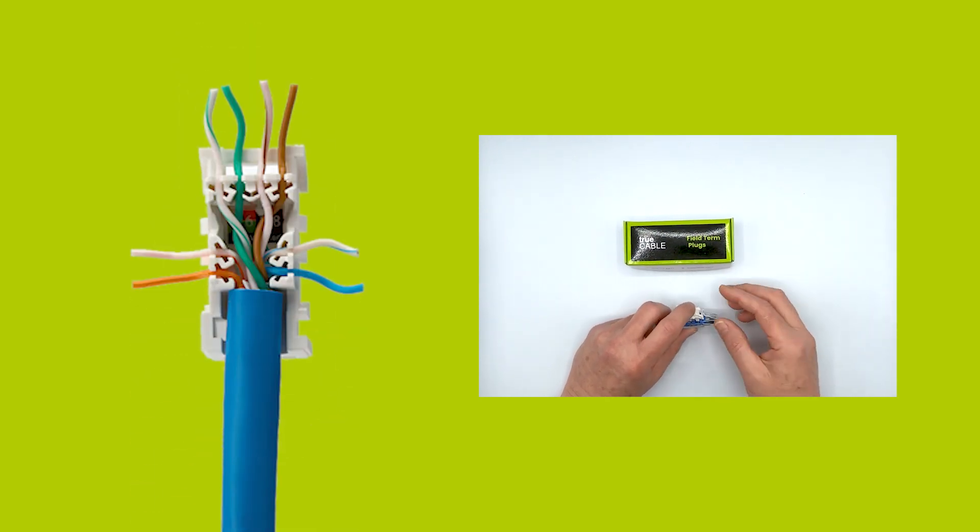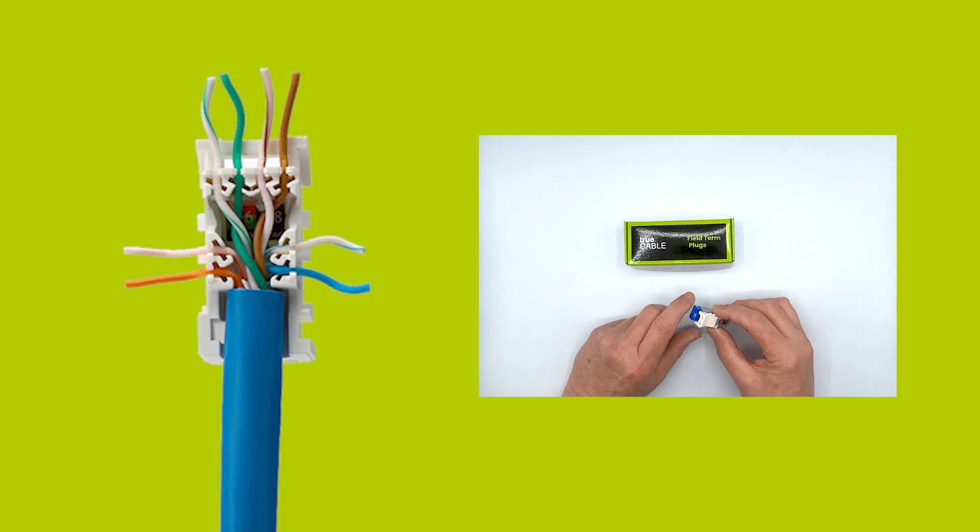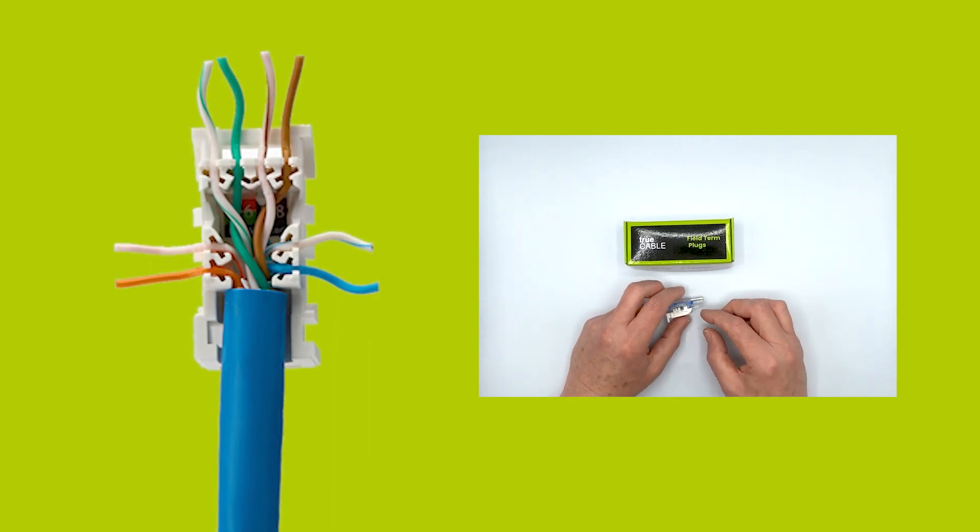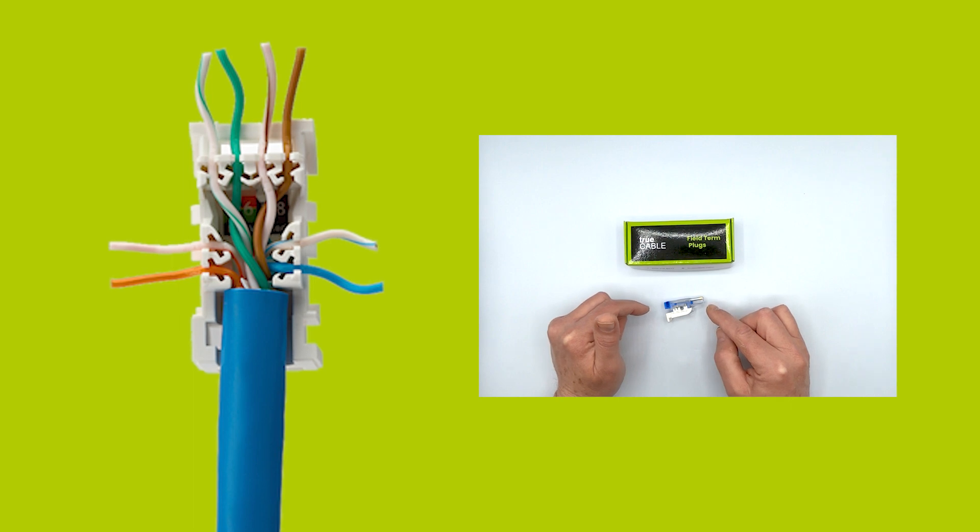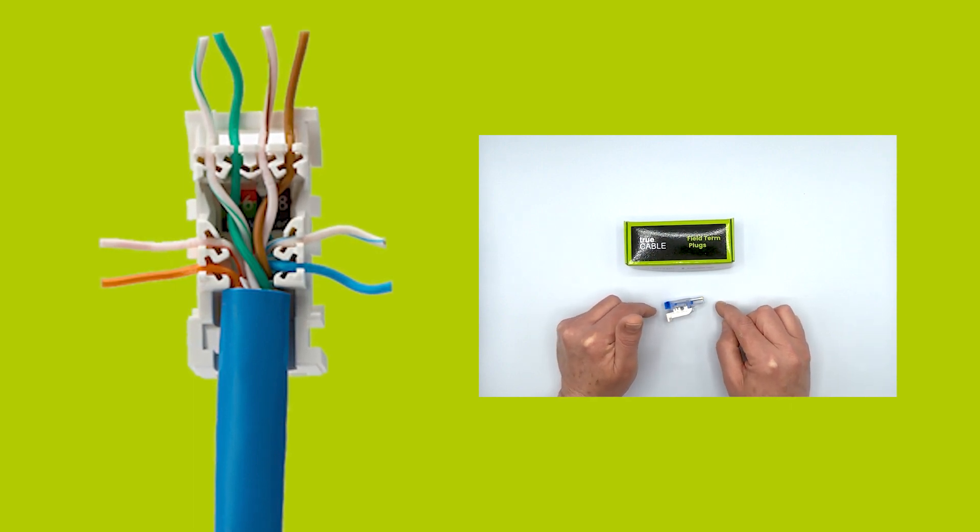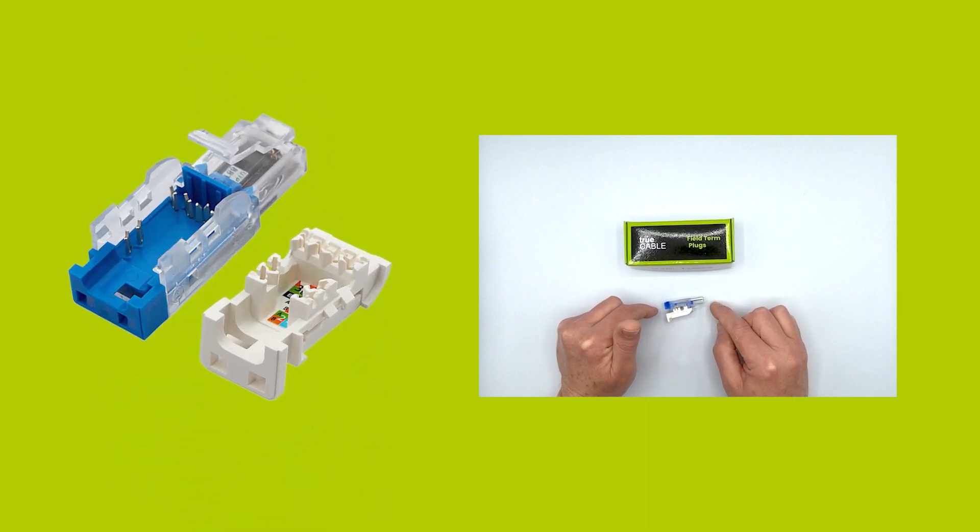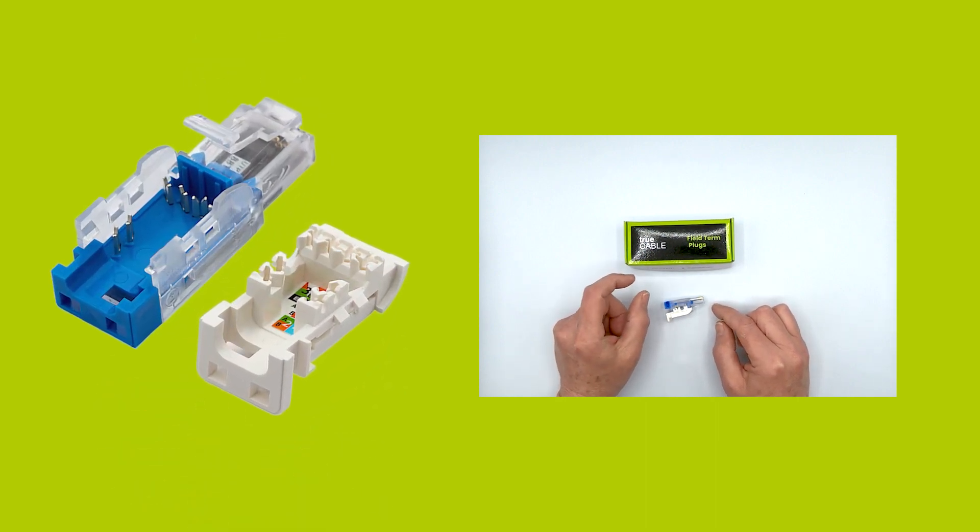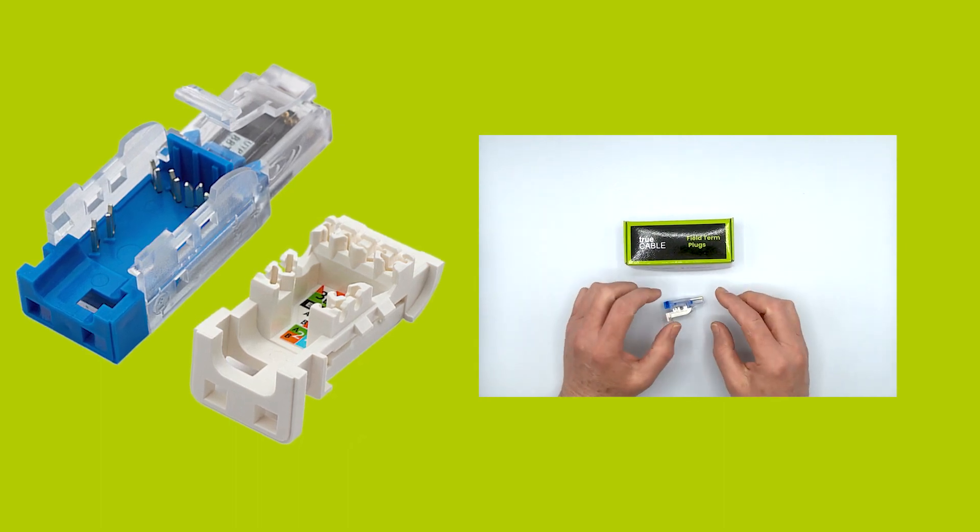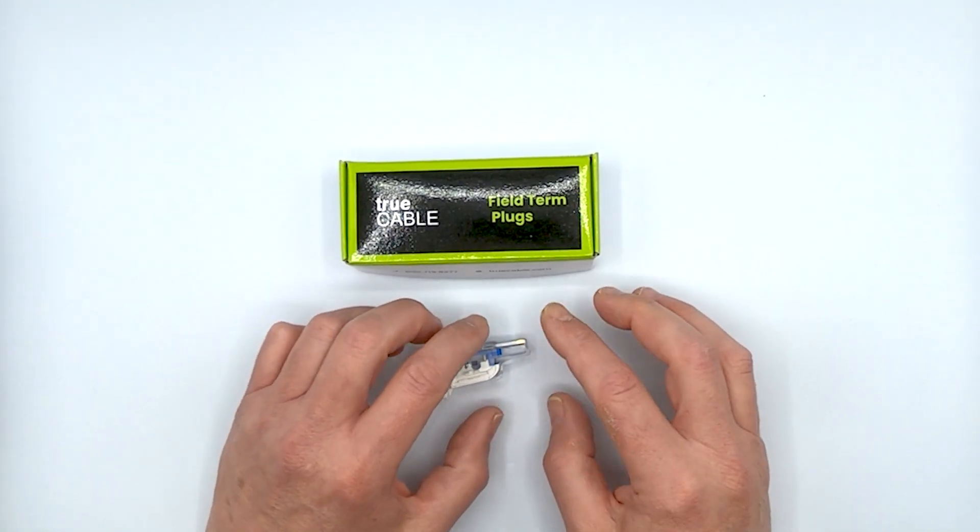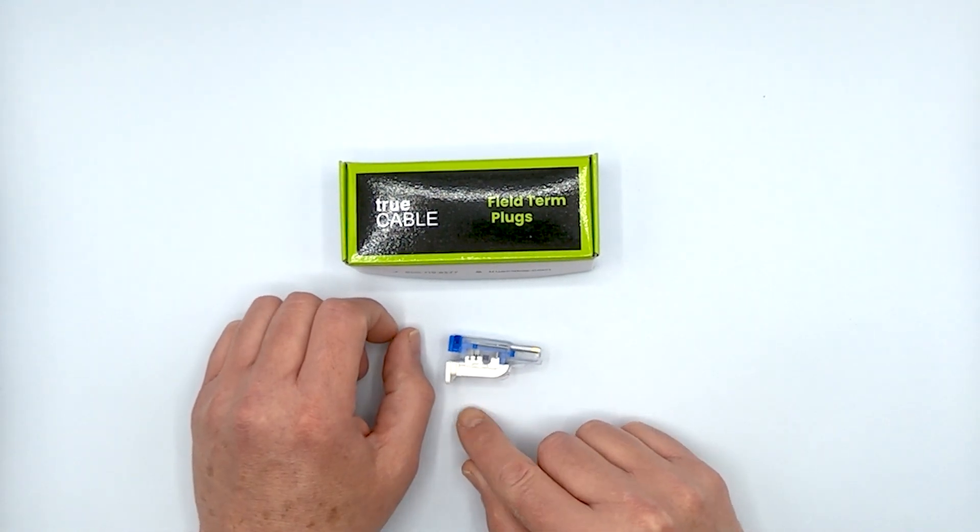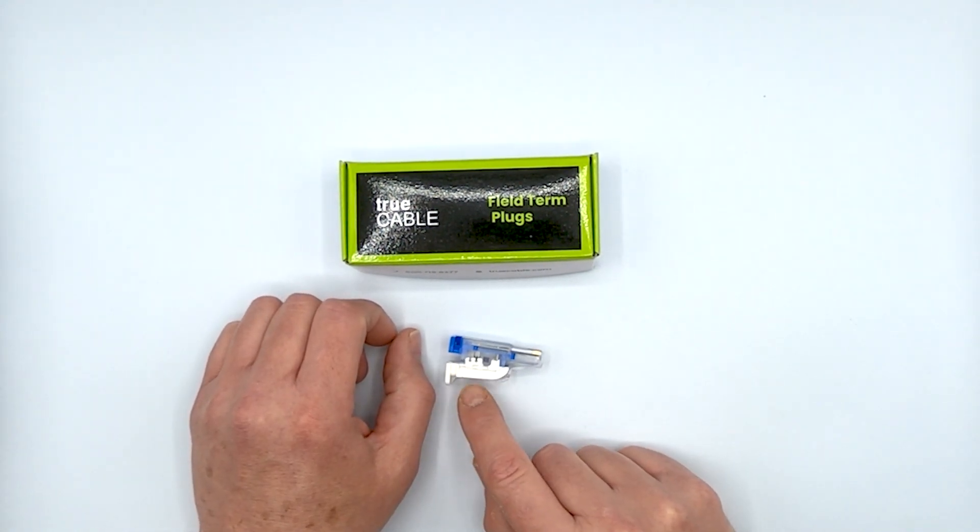That's the only one that we offer, but you can use this for Category 6 as well. Just keep in mind that this particular field termination plug is compatible from 6mm to 8.5mm unshielded Ethernet cable. You can use any category you like, as long as the outer cable jacket diameter is between 6 and 8.5mm.